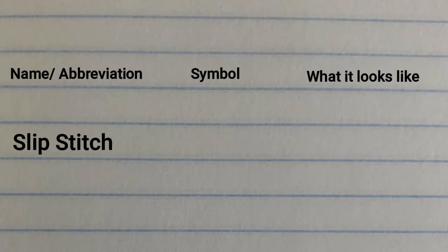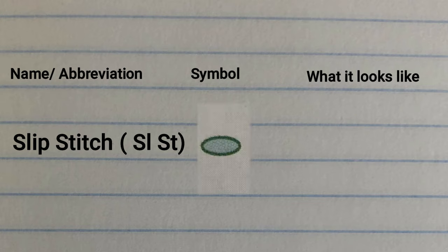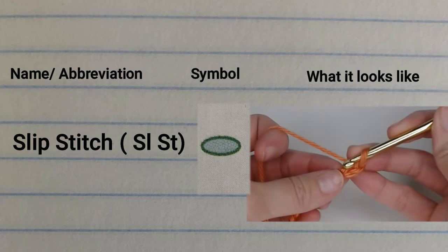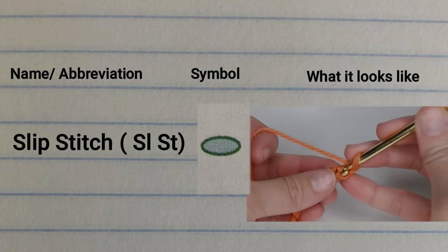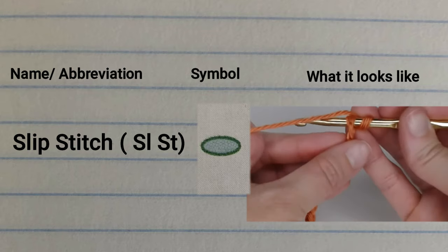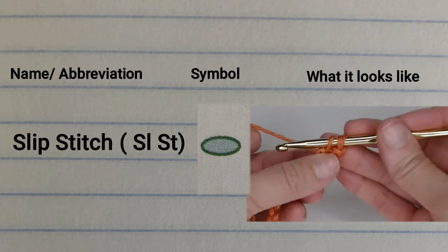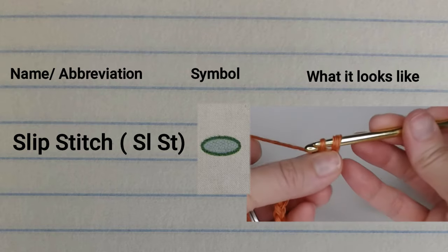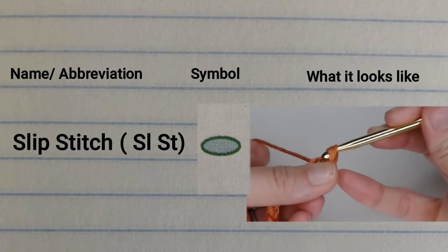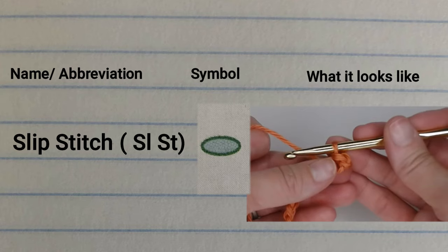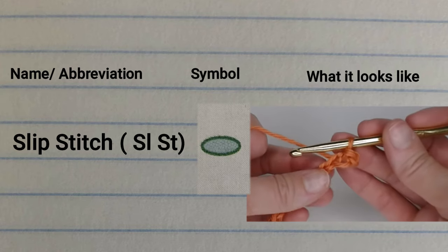Next we have the slip stitch. Here is the abbreviation, here is the symbol for a slip stitch, and here is what a slip stitch actually looks like. You will enter your crochet hook into the stitch, yarn over, pull through, and pull that yarn through the first loop on your crochet hook. And that is a slip stitch.